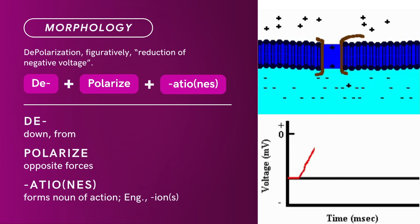It's a compound of D plus polarized plus atio. D means down or from. Polarized means opposite forces. Atio is a suffix that forms a noun of action. There you have it — Depolarization.